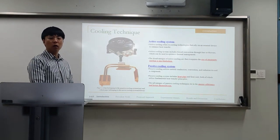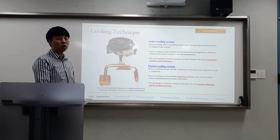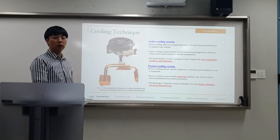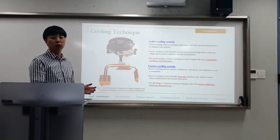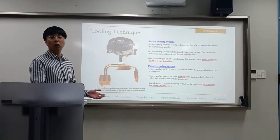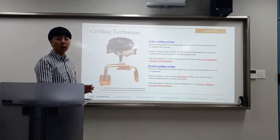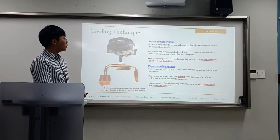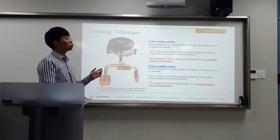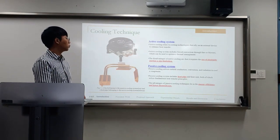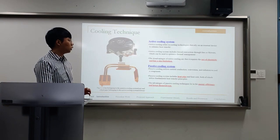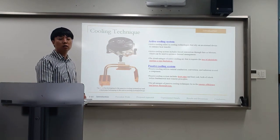A common problem in electronic devices is managing thermal conditions for optimal efficiency. Fundamentally, we can divide cooling techniques into two categories: active cooling systems and passive cooling systems. Active cooling refers to cooling technologies that rely on external devices to enhance heat transfer. Active cooling systems improve forced convection through vents or walls for optimal thermal management. The disadvantages of active cooling are that it requires electricity and has size constraints.